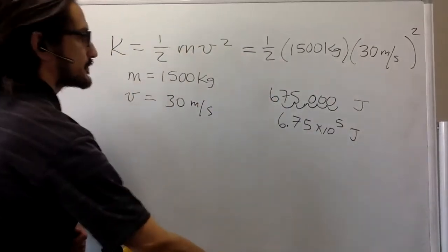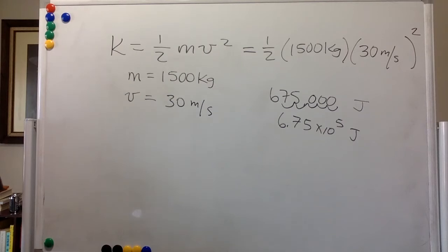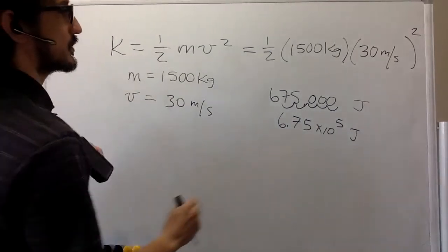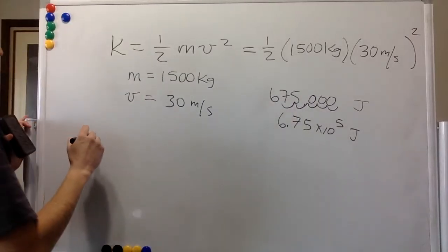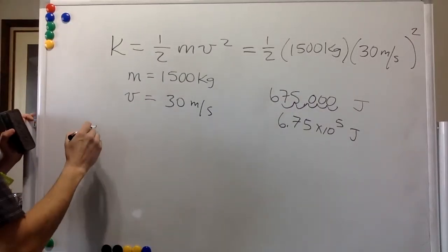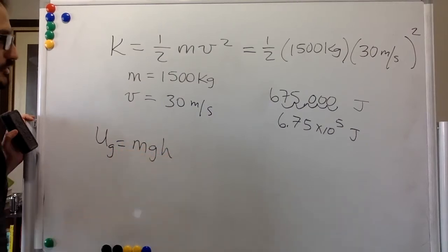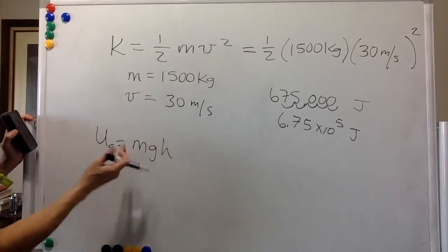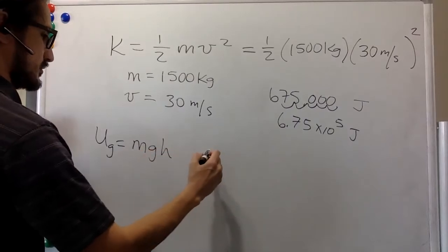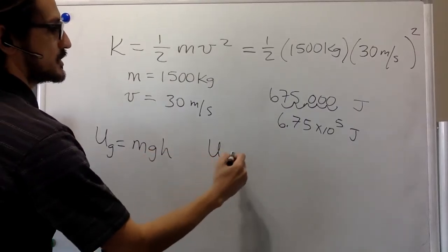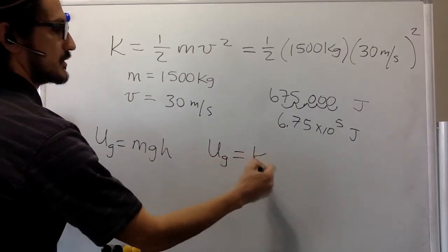In the second one, it says, from what height will the car have to be dropped to have the same amount of kinetic energy just before impact? So this is a kinetic energy. We have a numerical value for it here. The gravitational potential energy is mgh. So we want these two to be equal. So that means that we want Ug equal to K.